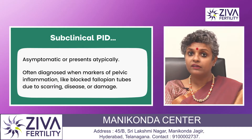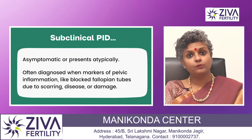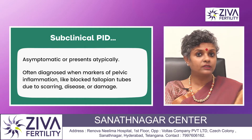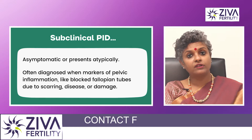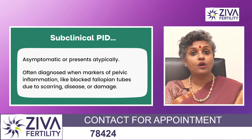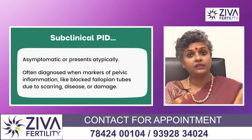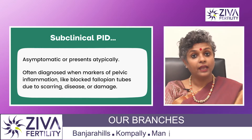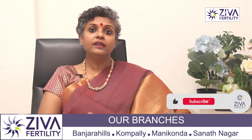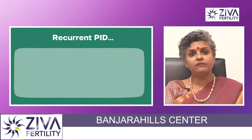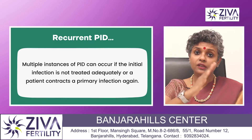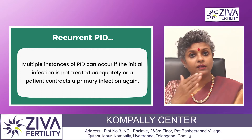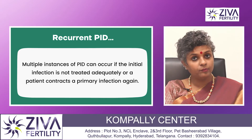The second type is Subclinical PID. This is when PID is only discovered when pelvic inflammation, blocked tubes, or scarring and damage are found. The third is Recurrent PID, which occurs when there are multiple infections and the initial infections are not properly treated, causing the infection to return.